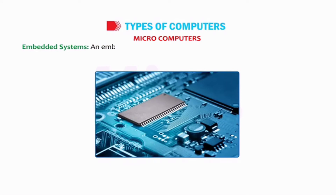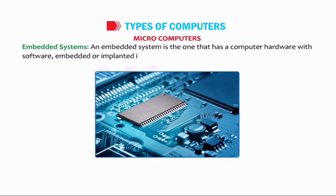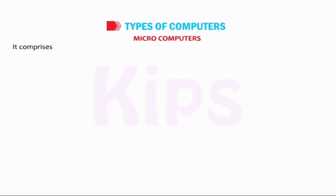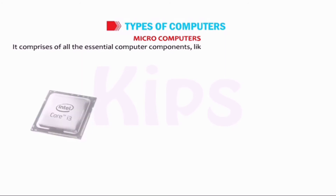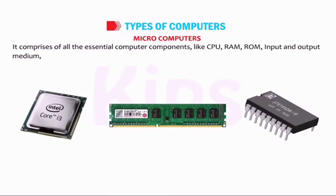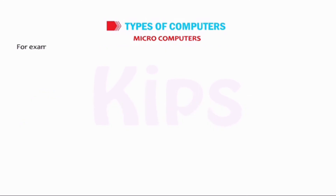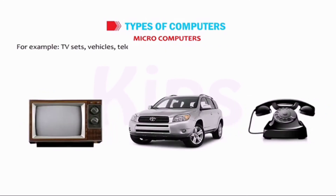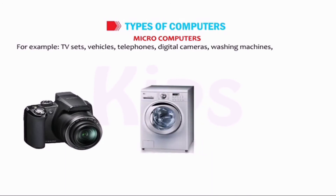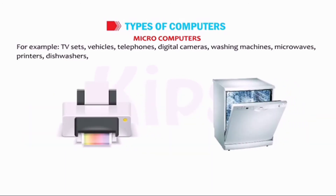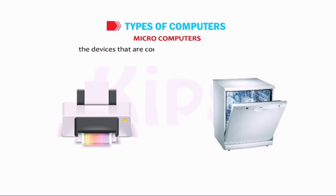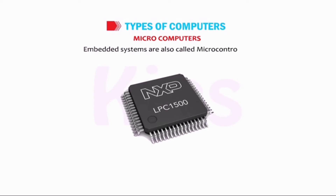Embedded Systems: an embedded system is one that has computer hardware with software embedded or implanted into a larger device. It comprises all the essential computer components like CPU, RAM, ROM, and input and output medium, but does not have a disk drive, keyboard or screen. It is designed to perform a specific task. For example, TV sets, vehicles, telephones, digital cameras, washing machines, microwaves, printers, dishwashers and medical equipment are devices controlled by embedded systems. Embedded systems are also called microcontrollers.